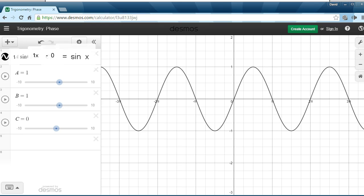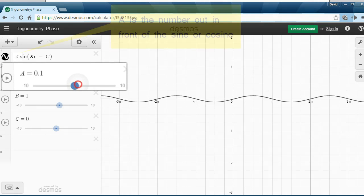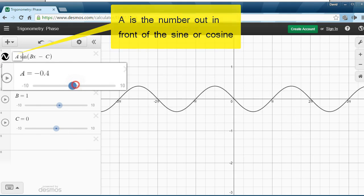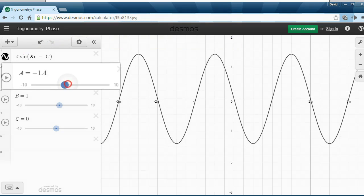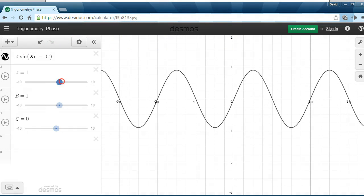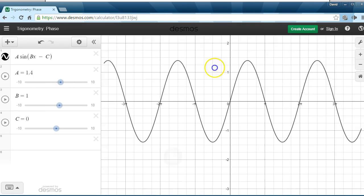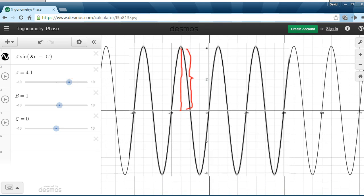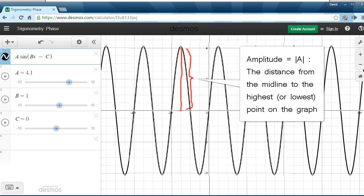And I want you to see first what A does. Since A is the amplitude, amplitude is the height from the midline to the high point or the low point. It's just the distance from the high point to the low point. I'm going to shrink this down a little bit and make this go up higher and higher. You can see that's what A is controlling, it's just the highest point on this graph.